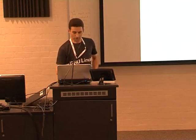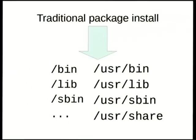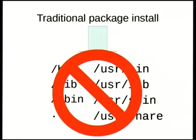For a traditional package install on a normal traditional sort of distribution, the files for each package end up being splattered basically all over the file system. You'll get programs in /bin, libraries in /lib, same for the /usr versions of those. In a traditional package management system, you tend to have a single version of any given package that can be on the system at any point in time — if you want more than one version, you'll end up with clashes in /bin, /lib, and so on.